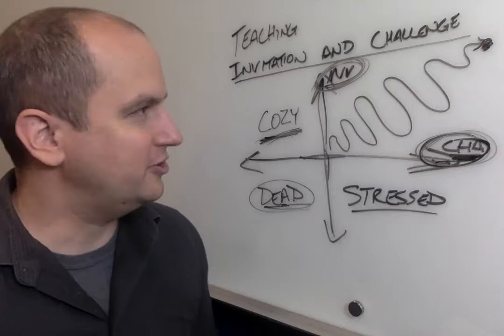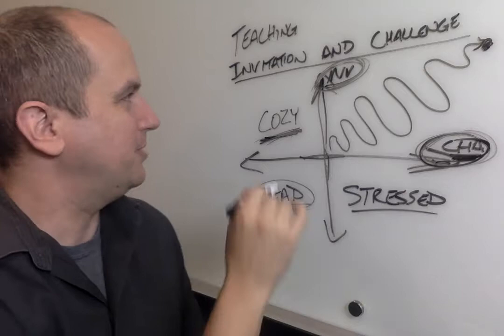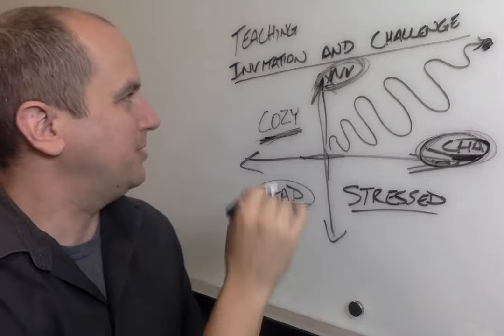Or if you're a small group leader and you're just, man, my group is so cozy and we just love each other but nothing gets done. One of my mentors used to say it's like a box of puppies. Everybody's just licking each other. Nothing's getting done. If your small group is a box of puppies, then you've got to figure out how do we bring more invitation here?